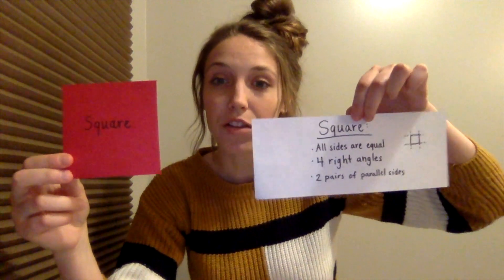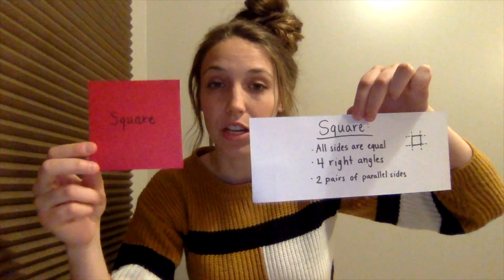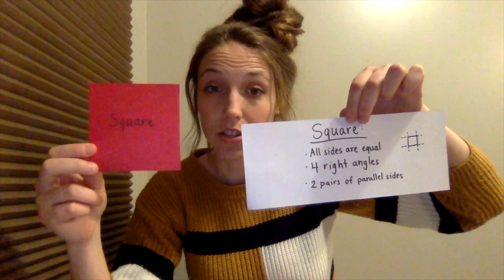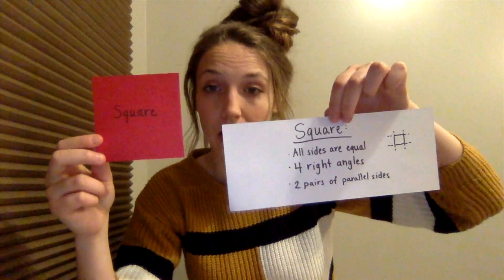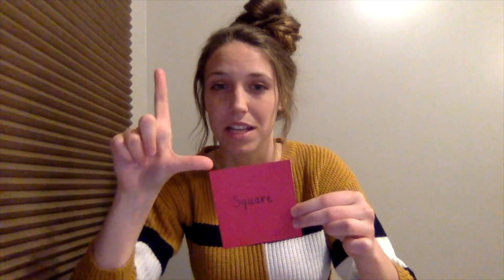The first one is our square. The attributes of a square are that all of its sides are equal — each of its four sides are equal in length. There are four right angles and two pairs of parallel sides. Each angle is a right angle because it makes that perfect L shape. It also has two sets of parallel lines, and those parallel lines are lines that never touch. So that was our square, our first quadrilateral.